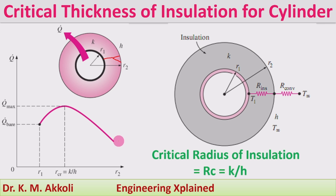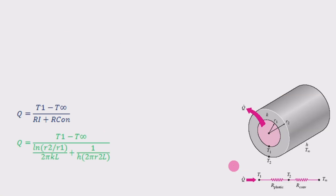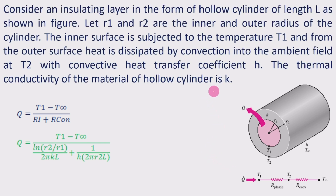For the cylinder, I am going to derive the expression for the critical thickness of insulation. In the next session I will derive the expression for the sphere. Here we consider r1 and r2, and two thermal resistances: R_insulation and R_convective, representing the insulation layer and the convection to the outside fluid. The critical thickness rc is given by k/h. To begin the derivation, consider an insulating layer in the form of a hollow cylinder of length L as shown in the figure.